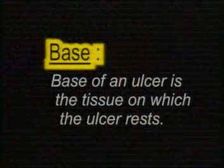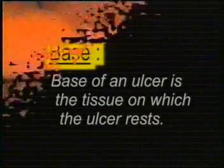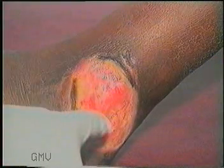Now palpate through the floor to note the consistency of the base and to identify the underlying structure — whether it is a muscle, a fascia, or a bone. The base is the tissue on which the ulcer rests. If the ulcer is small, pinch it up and palpate the base between the fingers; if the ulcer is large, the base has to be felt over the floor with gloved fingers. All chronic ulcers will have a firm base due to fibrosis, but a hard feel or marked induration should raise the suspicion of malignancy.